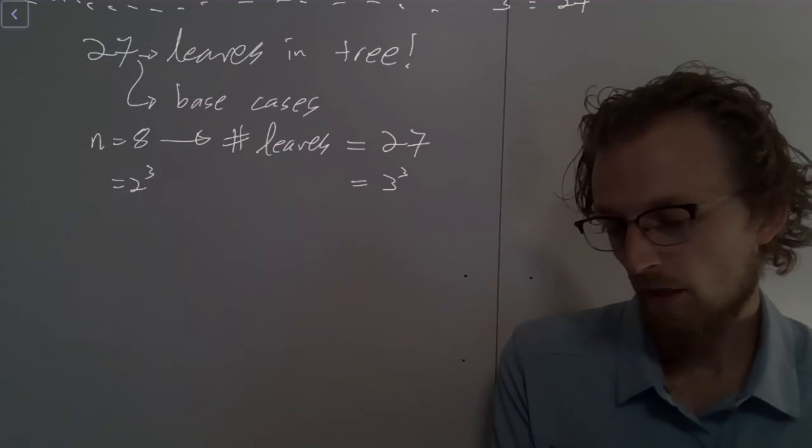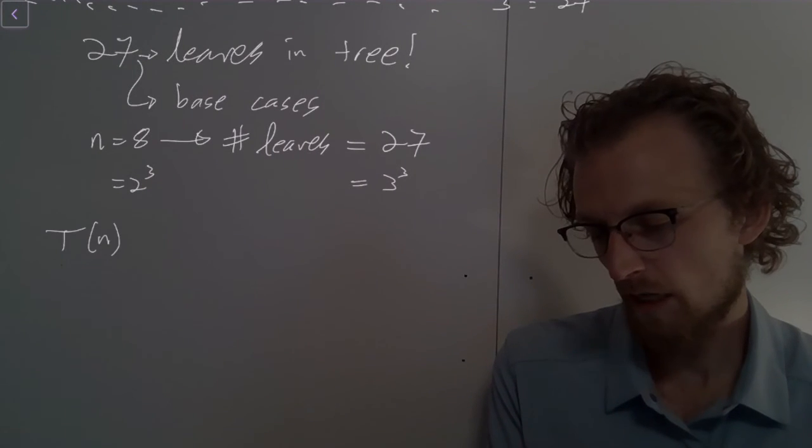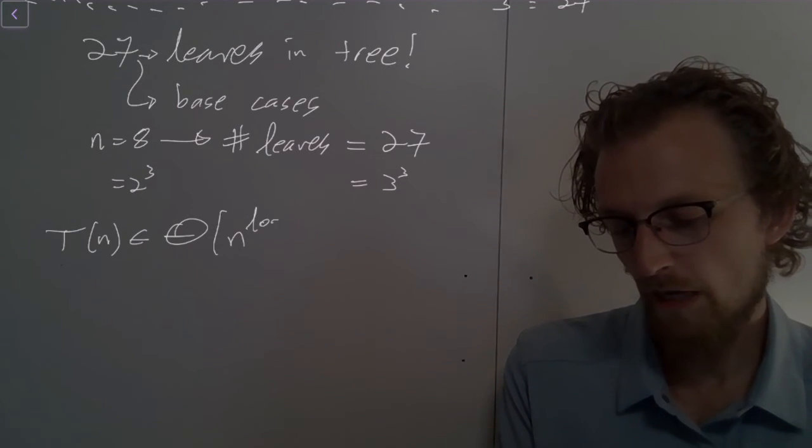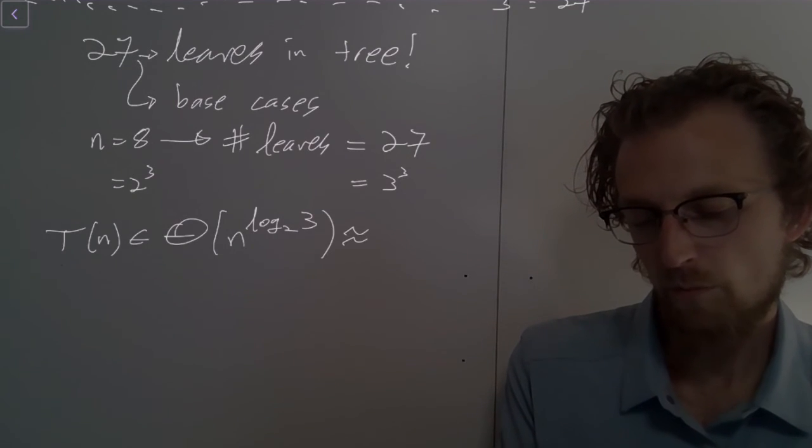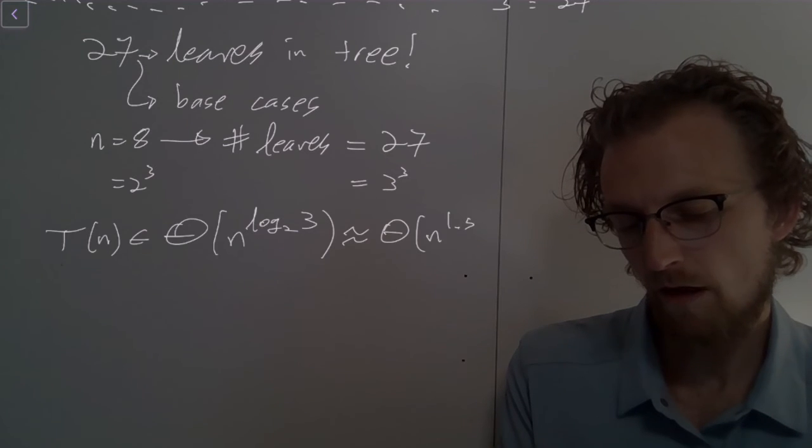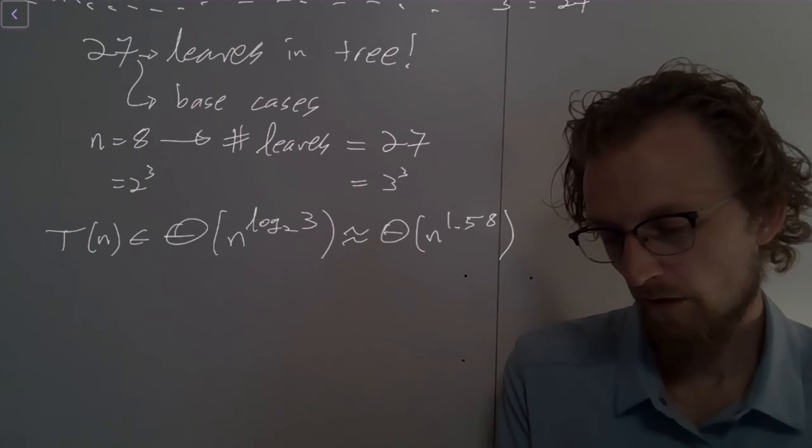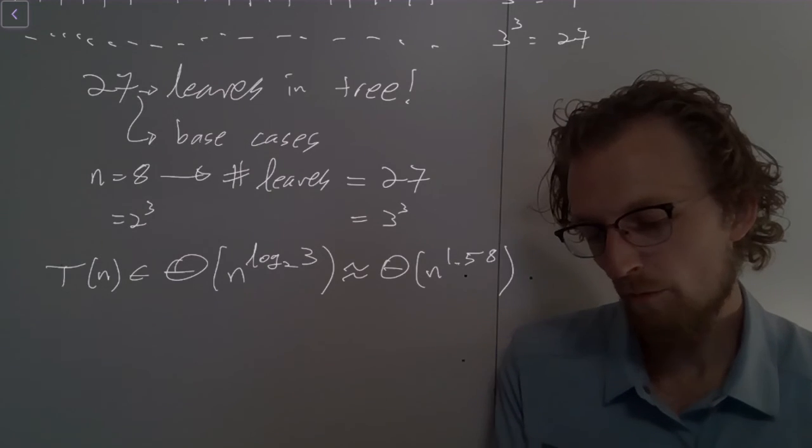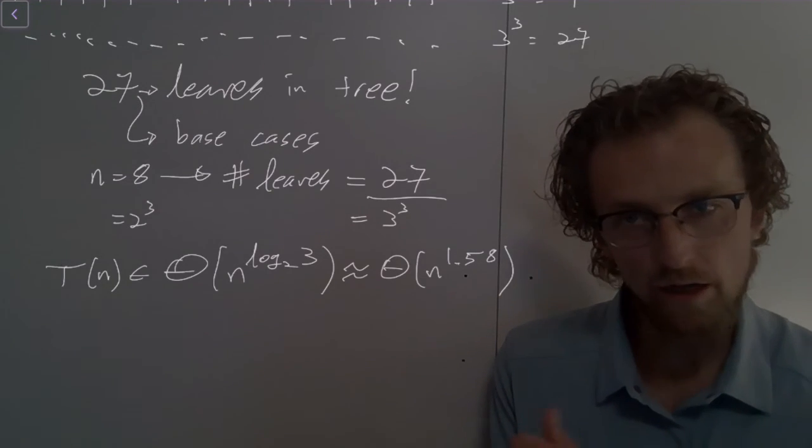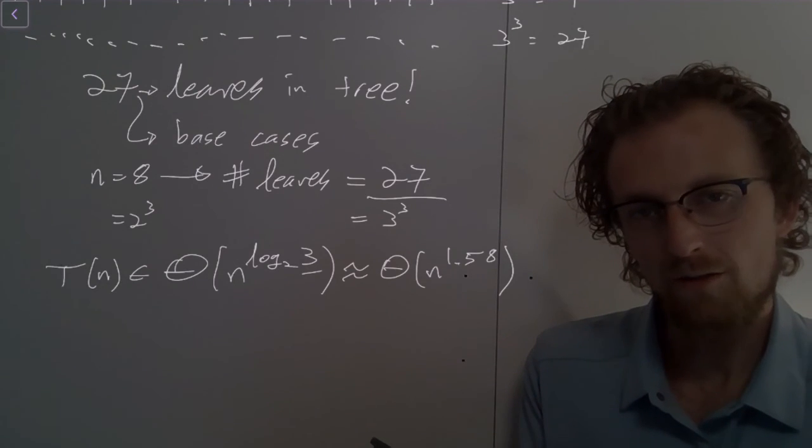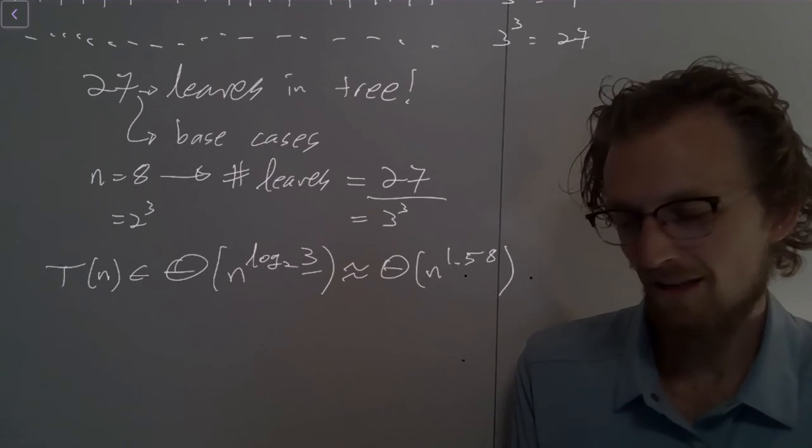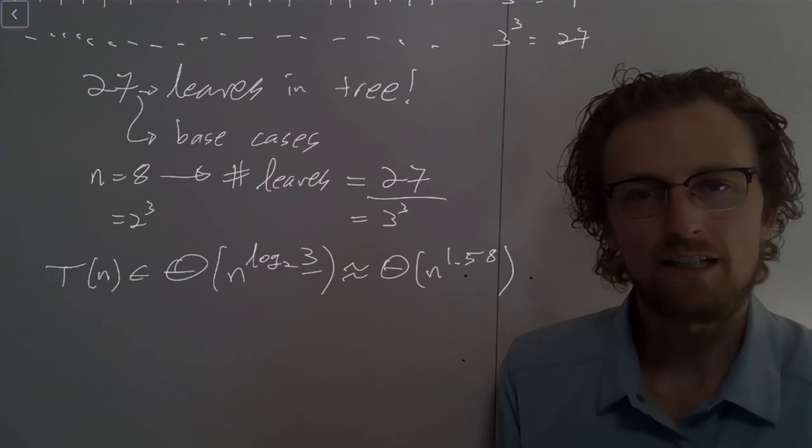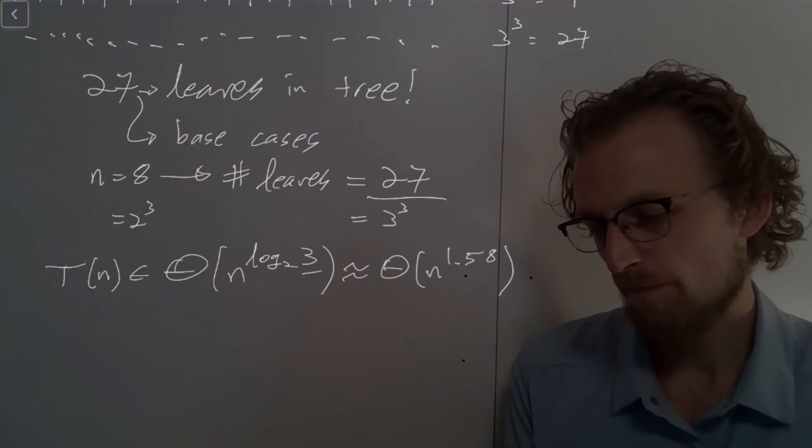And we can actually work this out in detail. And you've done several examples that look something like this. But if we were to work this thing out in general, what we would end up with is a recurrence relation that is in the following complexity class: big theta of n to the log base 2 of 3, which is approximately big theta of n to the 1.58. And so this n to the log base 2 of 3 captures exactly how many leaves there are in a recursion tree. In a ternary tree that looks like this, we have exactly 27 leaves.